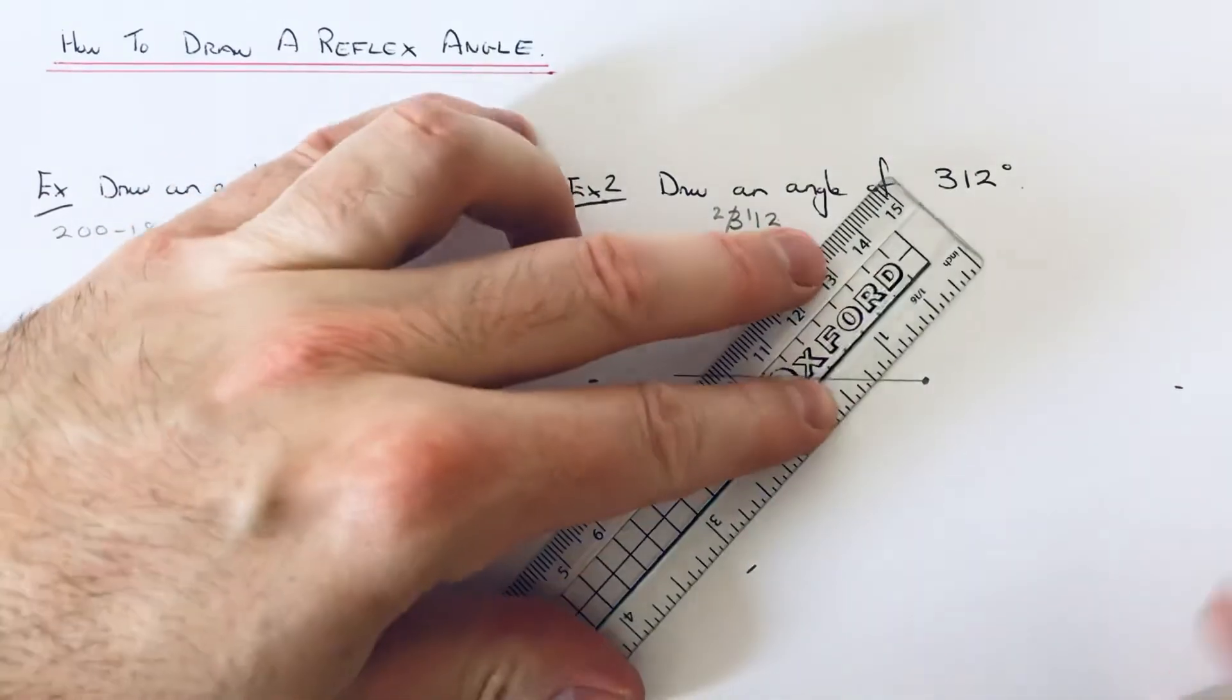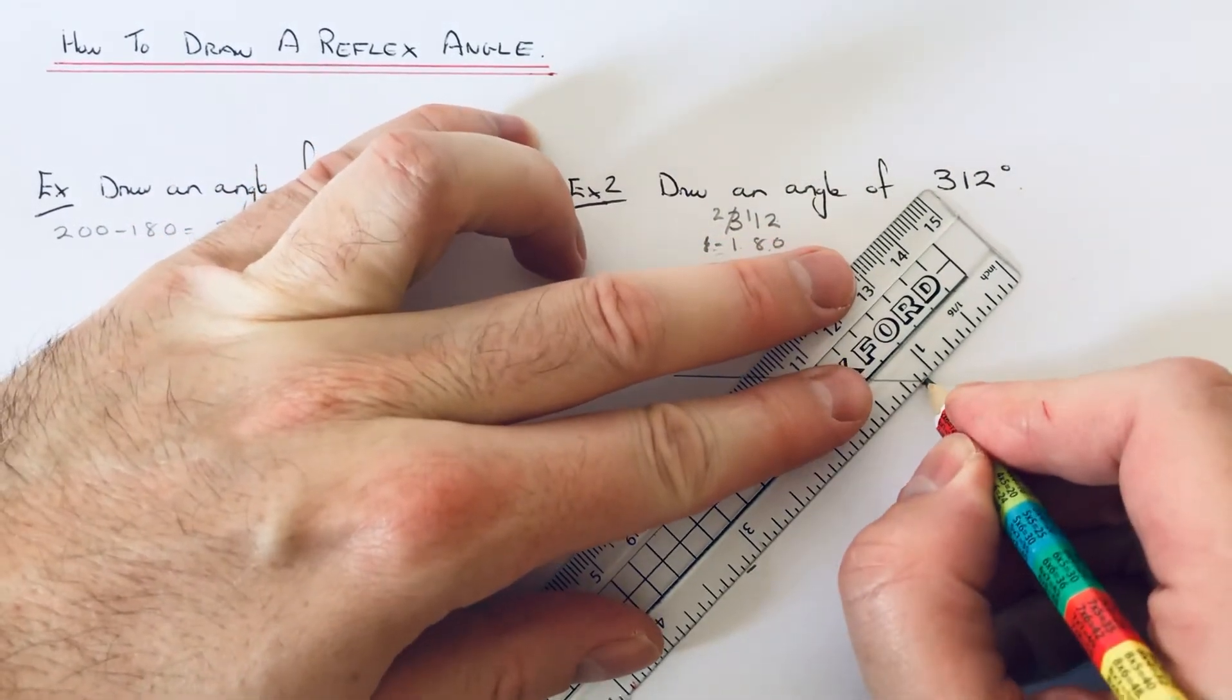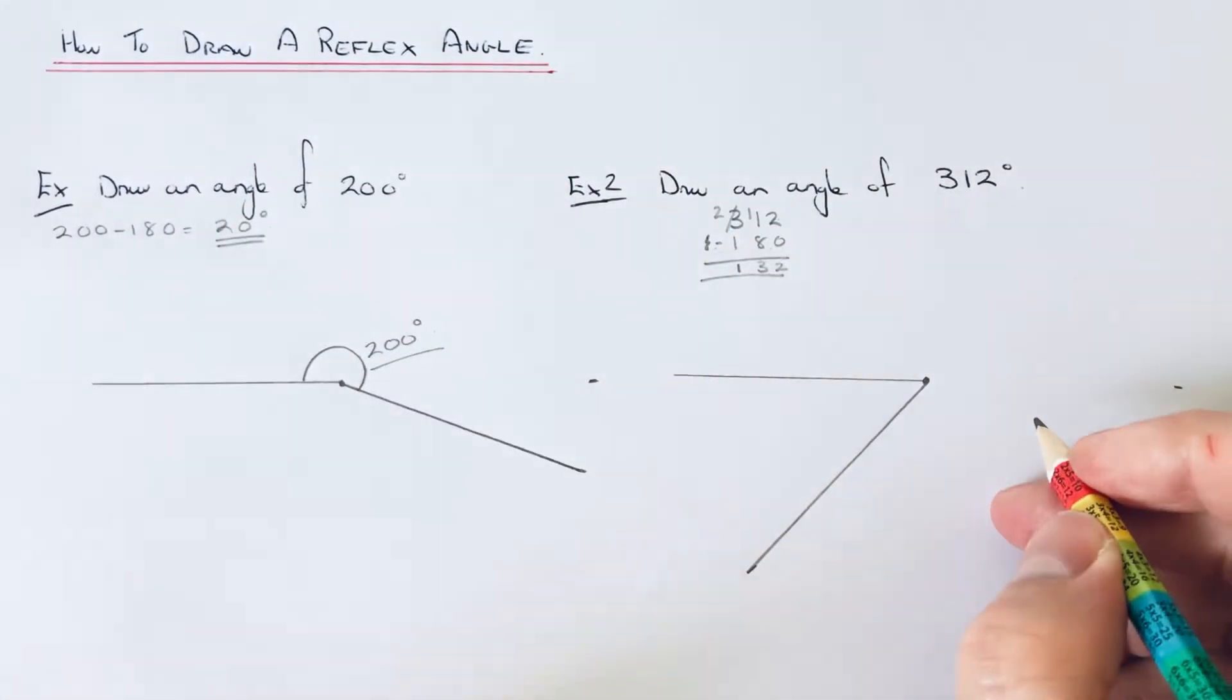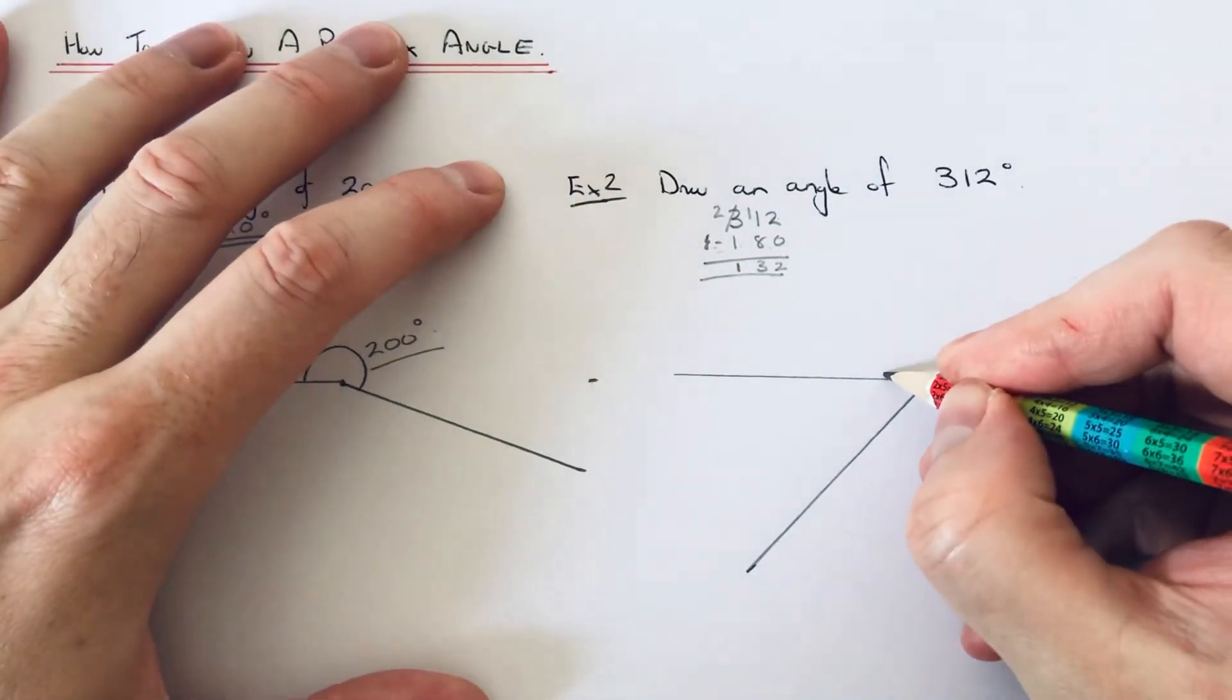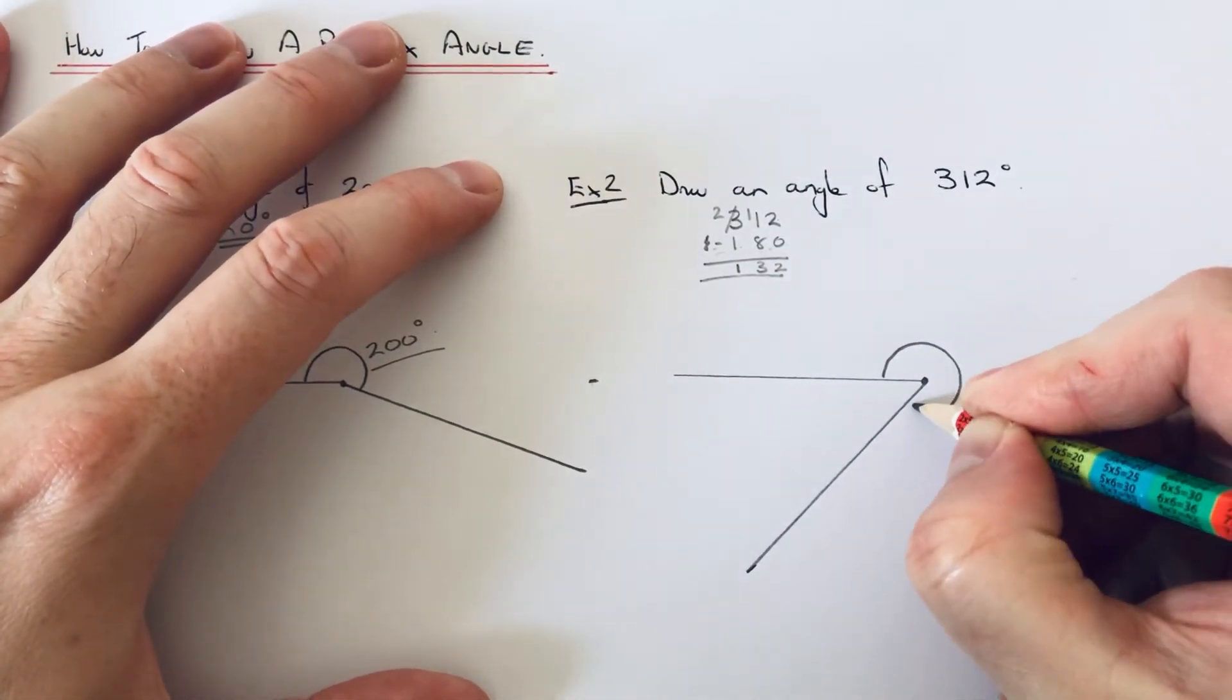If we join it back to the end of the line and just mark that angle that we've just measured, it's 312 degrees.